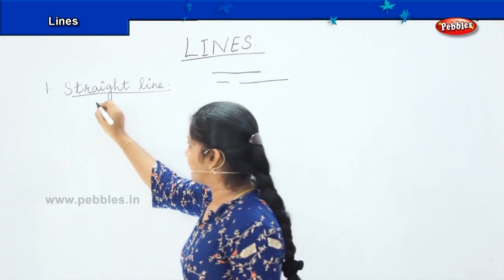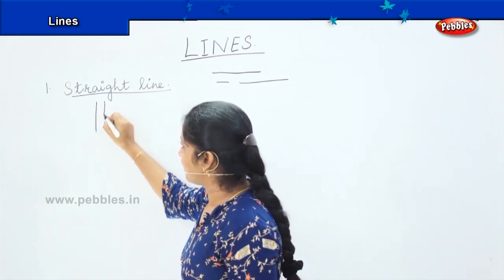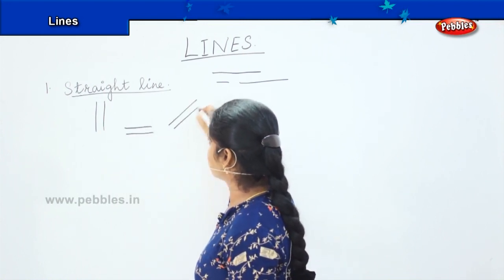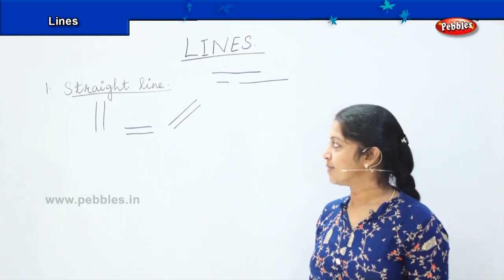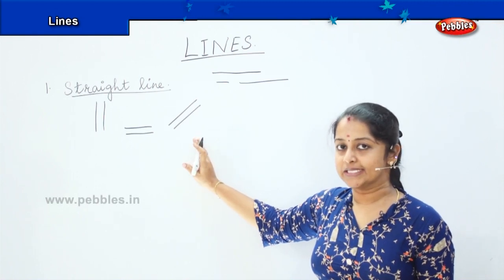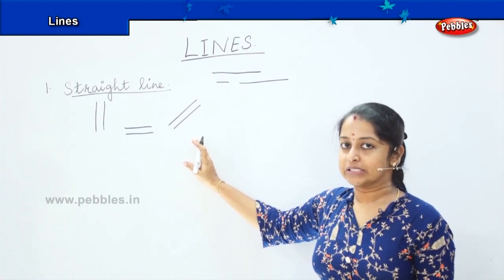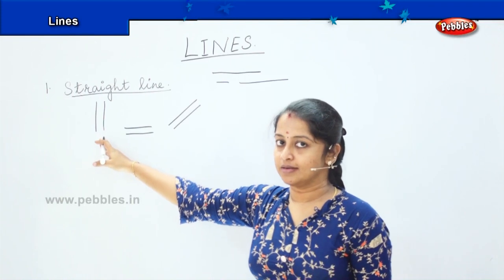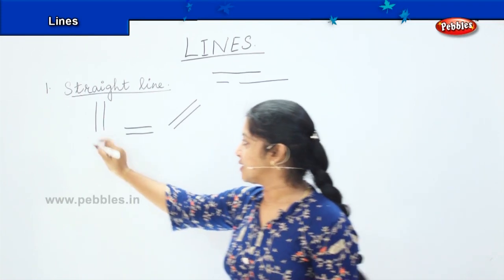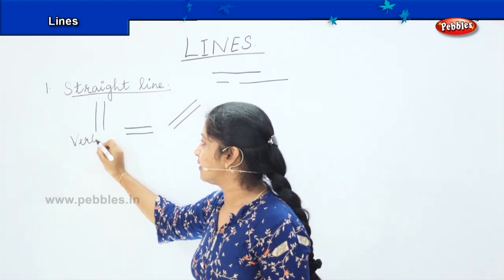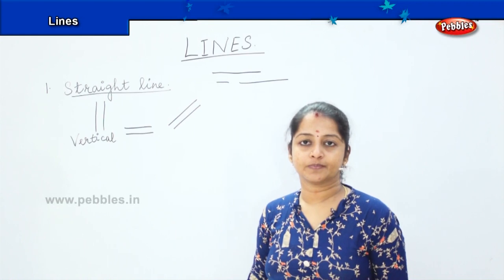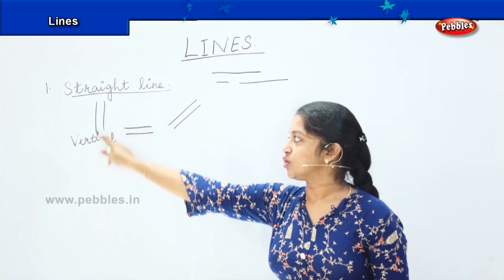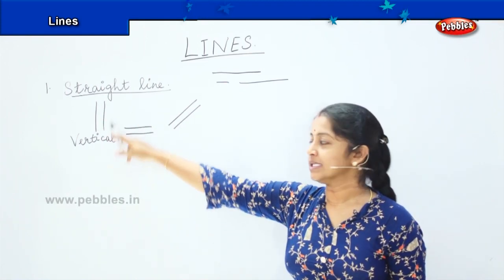If I draw like this — you would have learnt about these lines when you were in your smaller classes, right? What is this line called as? It's a standing line, right? It's a standing line, or we can also call it a vertical line. Where can you see a vertical line? What is the shape of a window? A window is usually a vertical line which is on a standing basis.